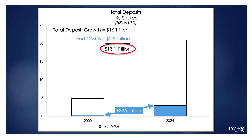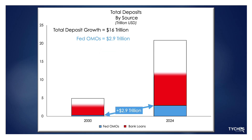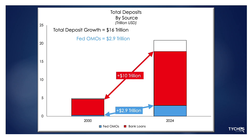So how do we solve this mystery? Where did these $13.1 trillion in deposits come from? That's actually easy. Bank loans created almost that entire amount, and we can see that right in the Fed's data. Bank loans during this 24-year period increased by $10 trillion, from $4.9 trillion to $14.9 trillion, creating $10 trillion in new deposits.